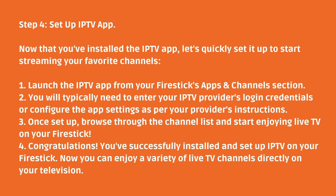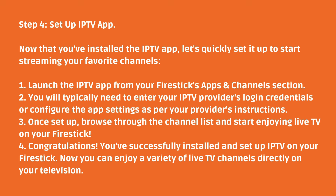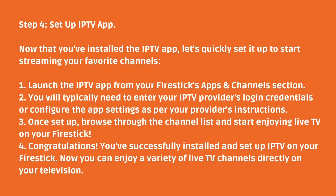Step 4: Set up the IPTV app. Now that you've installed the IPTV app, let's quickly set it up to start streaming your favorite channels. Launch the IPTV app from your Fire Stick's Apps and Channels section. You will typically need to enter your IPTV provider's login credentials or configure the app's settings as per your provider's instructions. Once set up, browse through the channel list and start enjoying live TV on your Fire Stick.